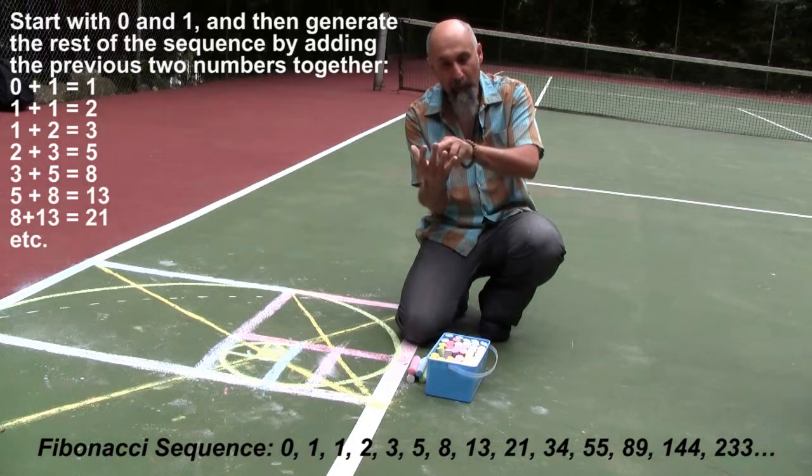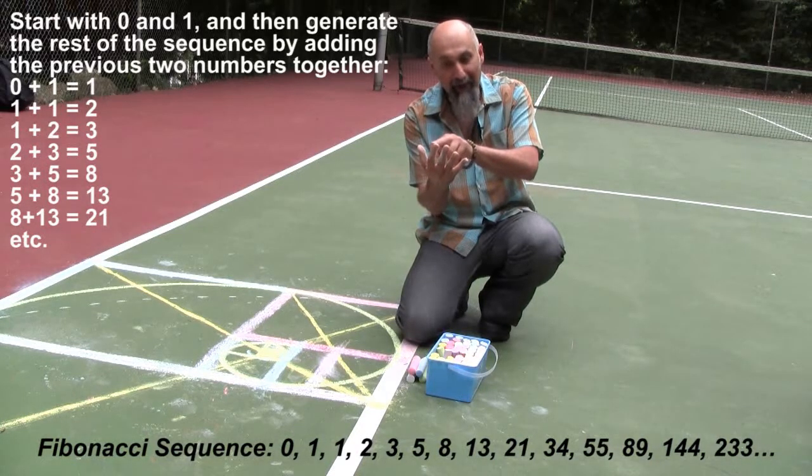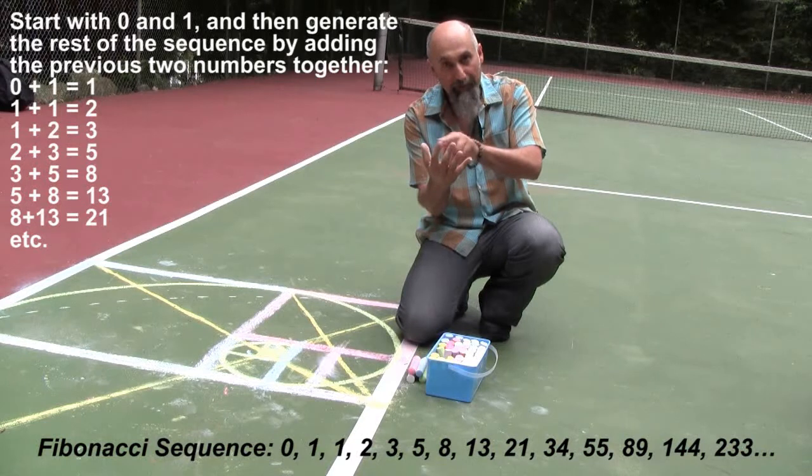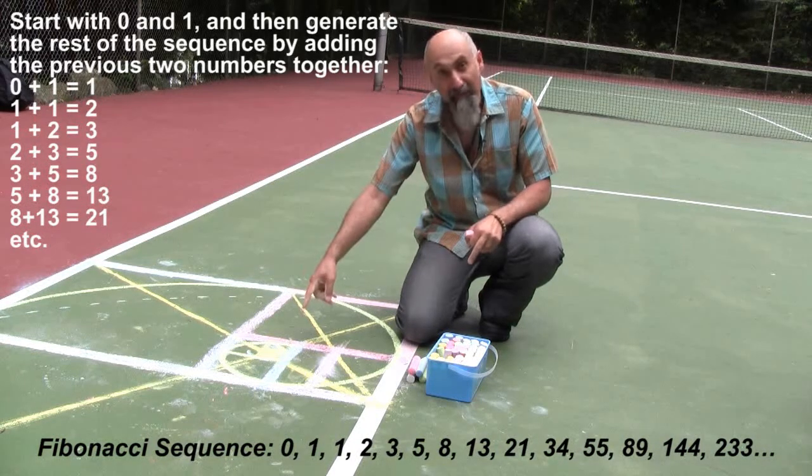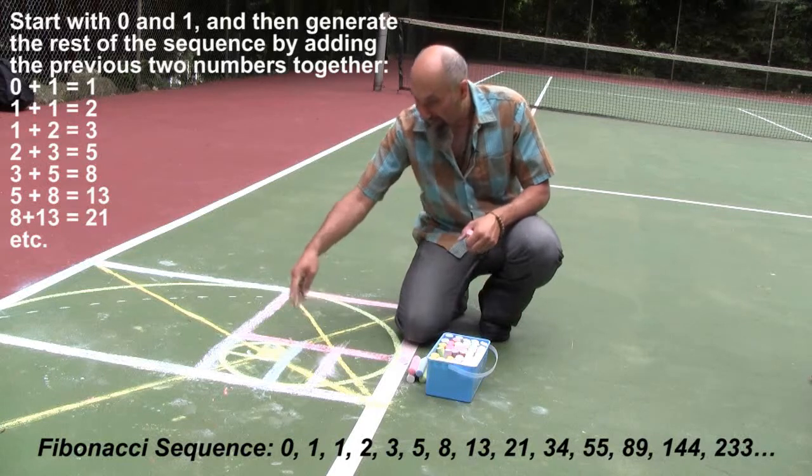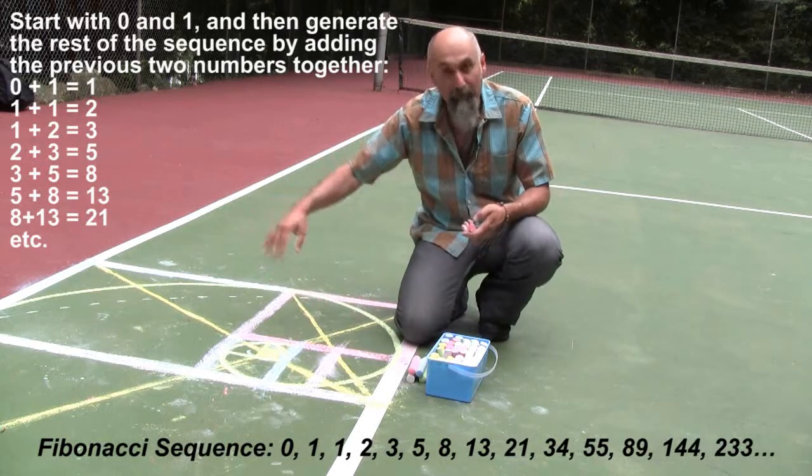So zero plus one is one, right? And then you add these two numbers to get the next number. One plus one is two. So you add these two numbers, which is one and two, to get the next number, which is three. And that's the Fibonacci sequence right here embedded with boxes inside the golden rectangle.